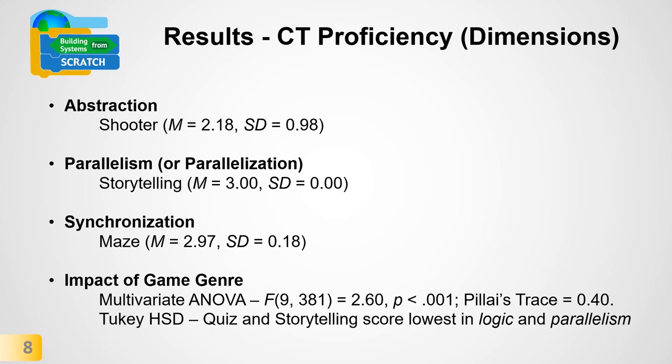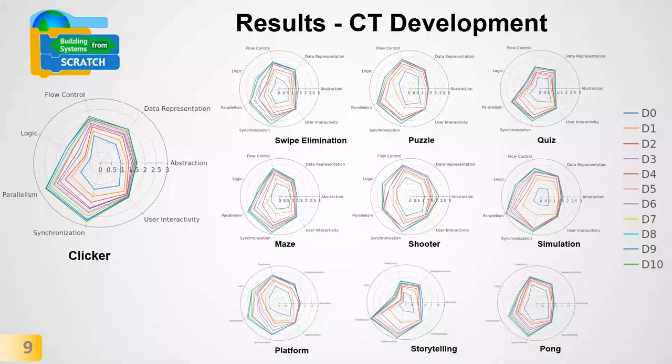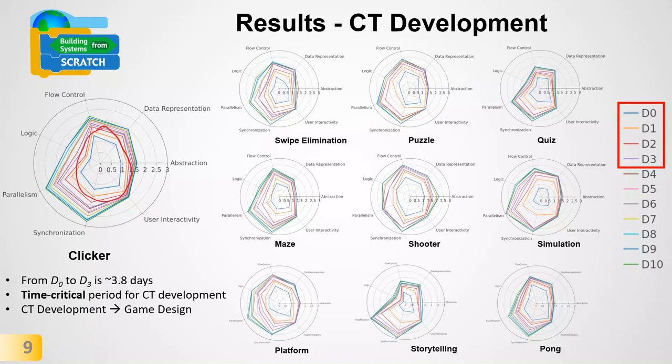Now let's see how game genre differently impacts computational thinking development. Most of the CT increase across all dimensions happens quite early in the projects — specifically within the first three deciles, which in our dataset means four days of work out of a two-week curriculum. This is a time-critical period: within the first three or four days, computational thinking profiles consolidate and then leave space for more specific or refined game design practices later on.